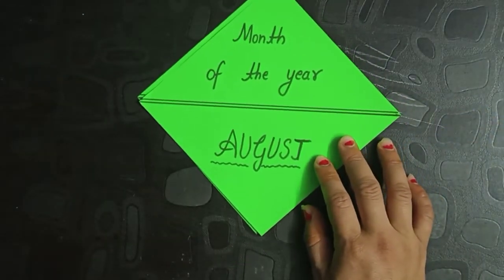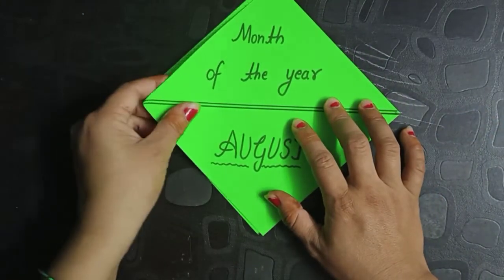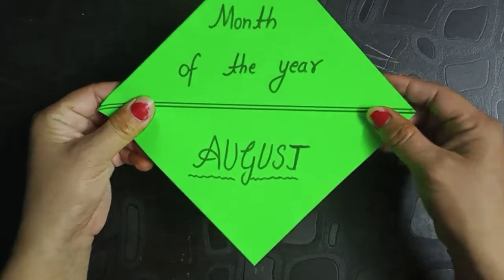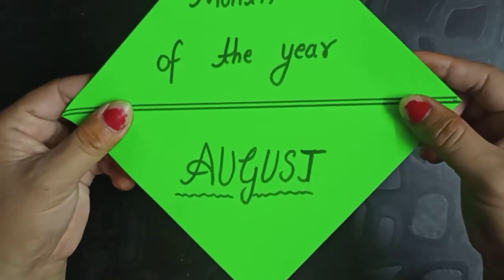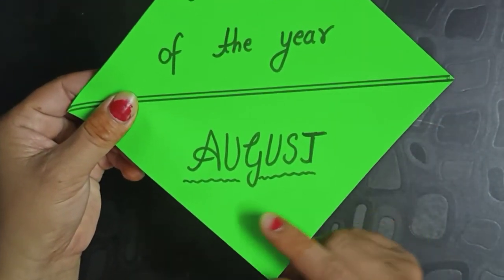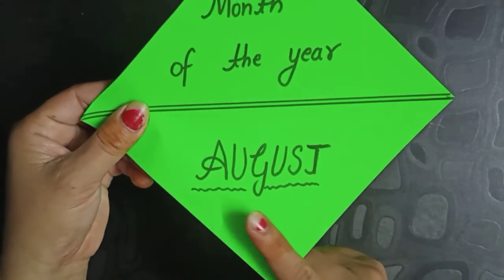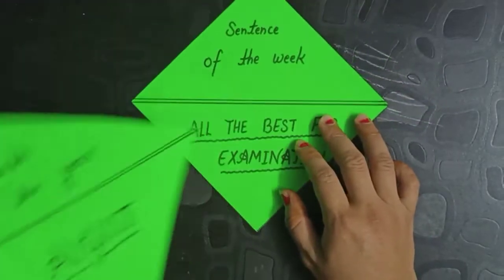Now next one is month of the year. Month of the year is August. A-U-G-U-S-T. August. Month of the year is August.